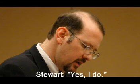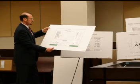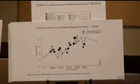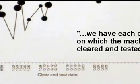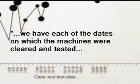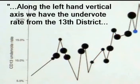Do you have any statistical basis for believing that machine failure or machine malfunction contributed to the high under-vote rate in Sarasota County this year? Yes, I do. What is the data that you used to reach that conclusion? From the event logs, I was able to ascertain the days on which each of the electronic voting machines used in Sarasota County was prepared for use in an election. On the lower x-axis, we have each of the dates on which the machines were cleared and tested. Along the left-hand vertical axis, we have the under-vote rate in the third district.